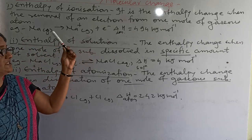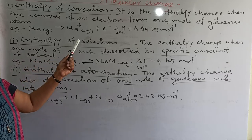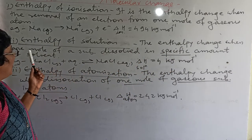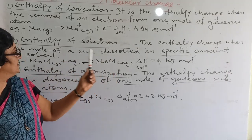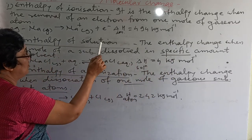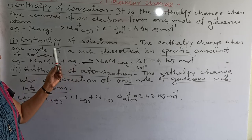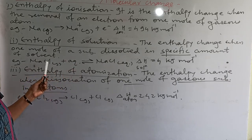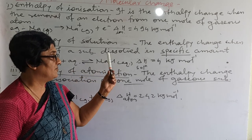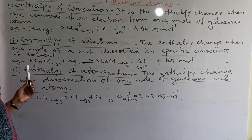The ionization process takes place and one example is given. The second definition is enthalpy of solution: the enthalpy change when one mole of a substance is dissolved in a specific amount of solvent. Dissolution of a substance into a specific amount of solvent is called a solution. For example, a compound dissolved in aqueous water forms an aqueous compound, and the delta H value is the delta H solution.